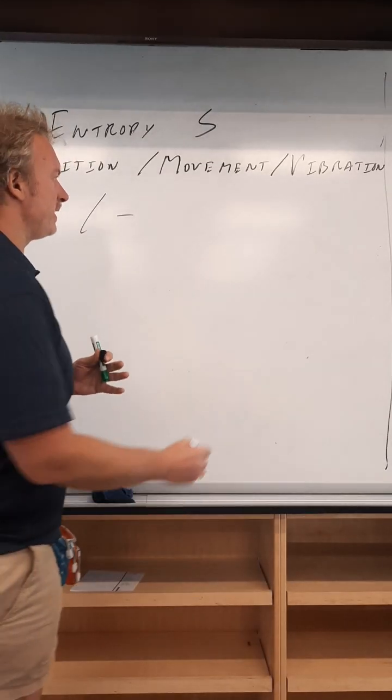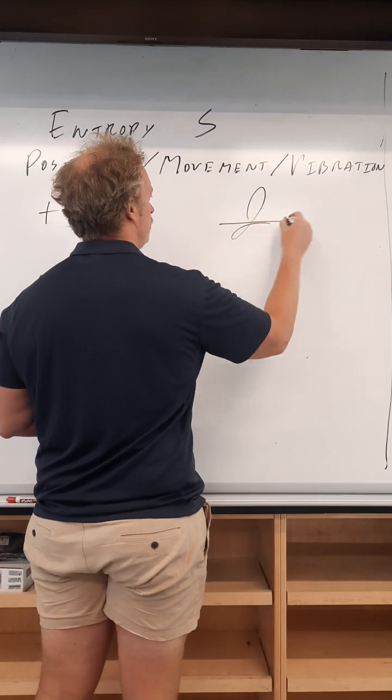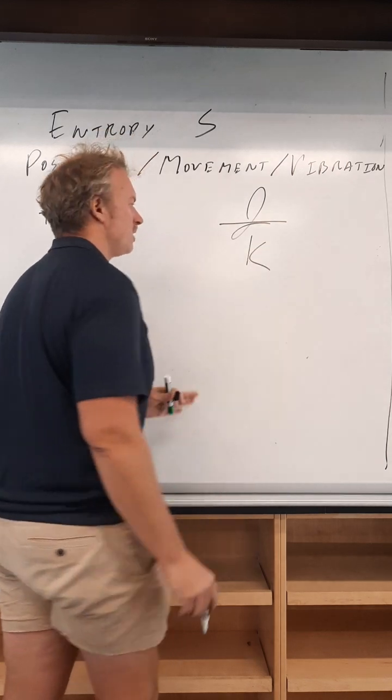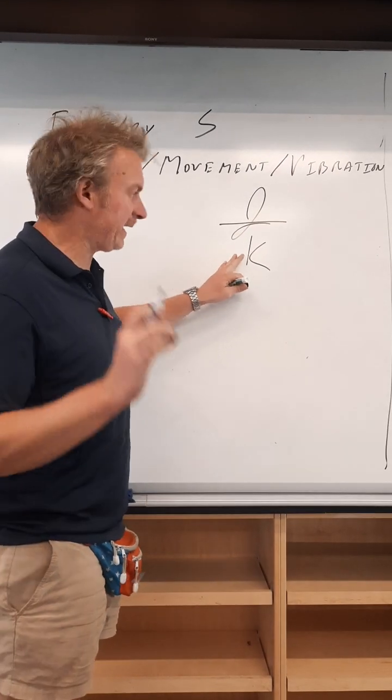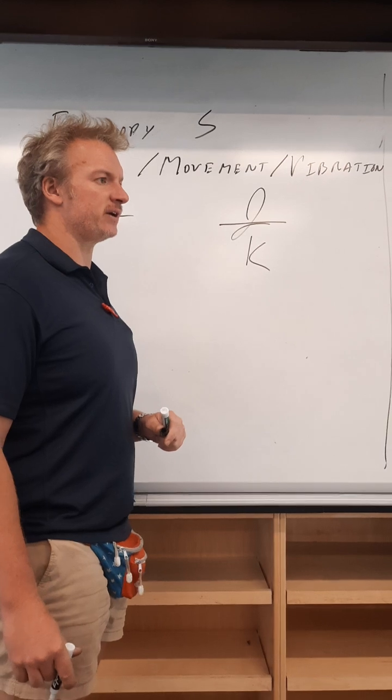That's what we're going to do right here. And it has the units of joules divided by temperature. Note that entropy is related to temperature directly. That's why it's in the division down here.